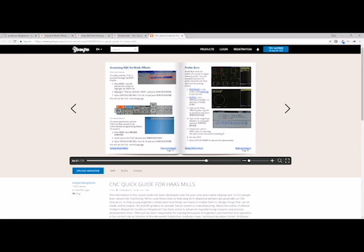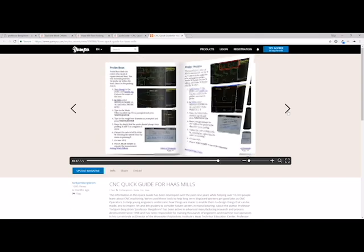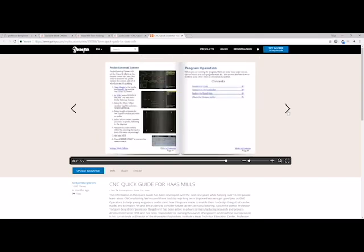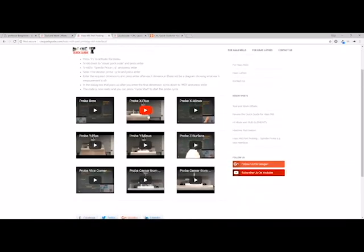Probe bore is the first one here, which will locate the center of a round hole in the part. But you can actually step through these pages here in the CNC Quick Guide. It will talk about each of the individual probing algorithms and macros. And then if you go back here to the blog post, you can see videos of each of those algorithms working.